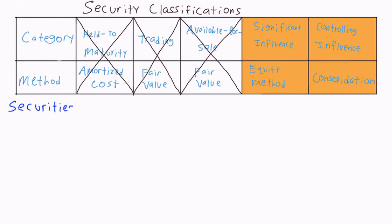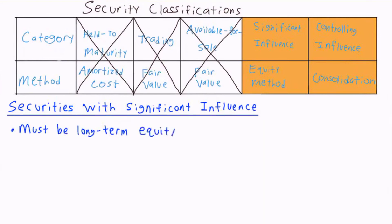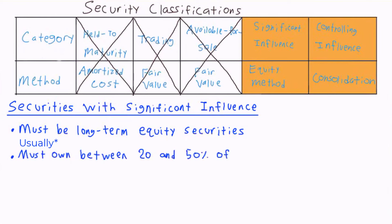First, let's discuss securities when a company has significant influence. Securities in this category must be long-term equity securities, so debt securities or any short-term securities will never fall into this category. The securities usually must make up somewhere between 20 and 50 percent of the outstanding voting stock of a corporation, which is why these securities are classified as carrying significant influence, as having between 20 and 50 percent of the voting power carries considerable influence over decisions that a corporation makes.